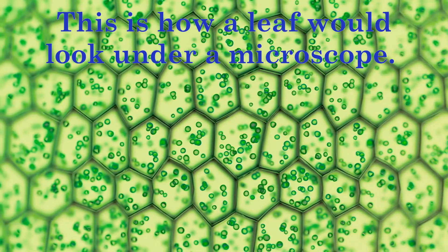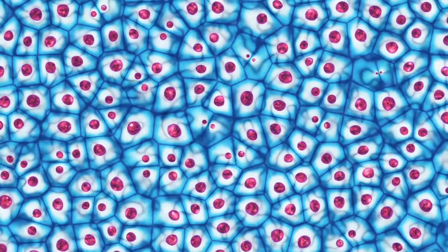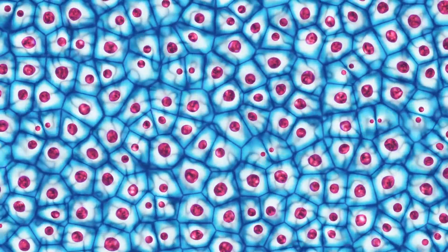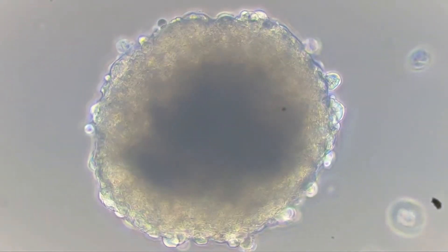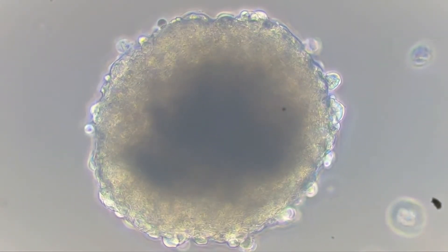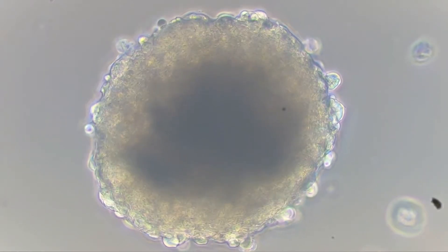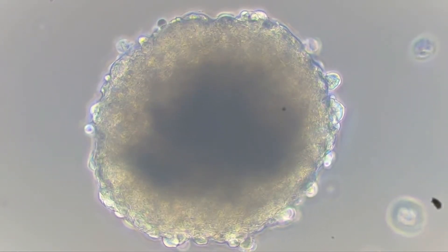These cells contain essential components for every organism. Every living thing is made up of at least one cell. Because cells are so vital, they are considered the building blocks of life. All living things are made from cells.